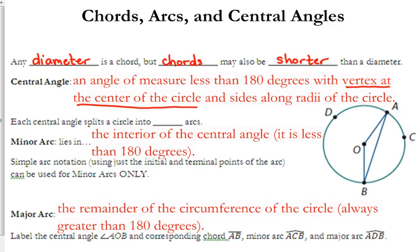We're going to look at some other angles within the circle, but their vertex is somewhere else. So to be a central angle, the vertex has to be at the center of the circle, and then the sides, of course, would then be radii.